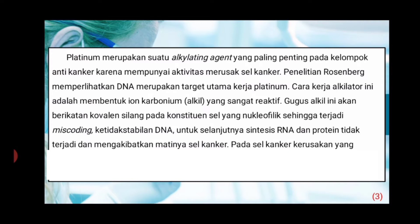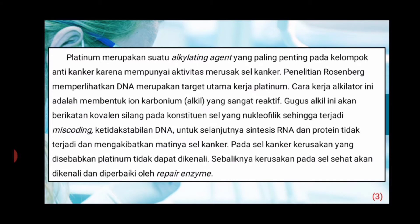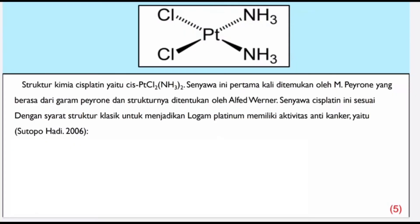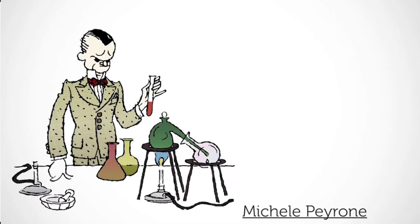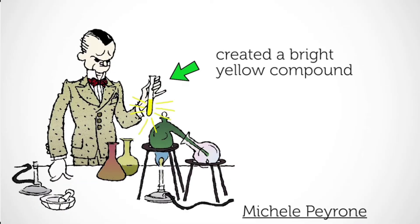Pada sel kanker, kerusakan yang disebabkan platinum tidak dapat dikenali. Sebaliknya, kerusakan pada sel sehat akan dikenali dan diperbaiki oleh repair enzim. Struktur kimia Cisplatin yaitu cis-[Pt(Cl)2(NH3)2] — bisa dilihat di gambarnya di slide. Senyawa ini pertama kali ditemukan oleh Peyrone yang berasal dari Garam Peyrone dan strukturnya ditentukan oleh Alfred Werner.